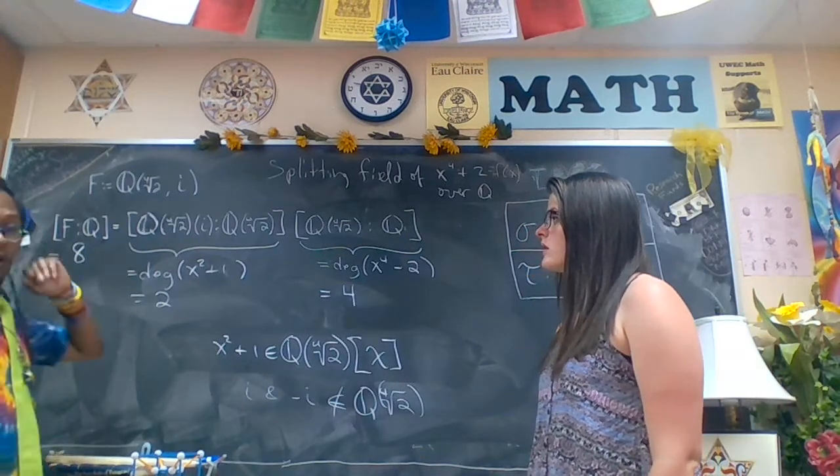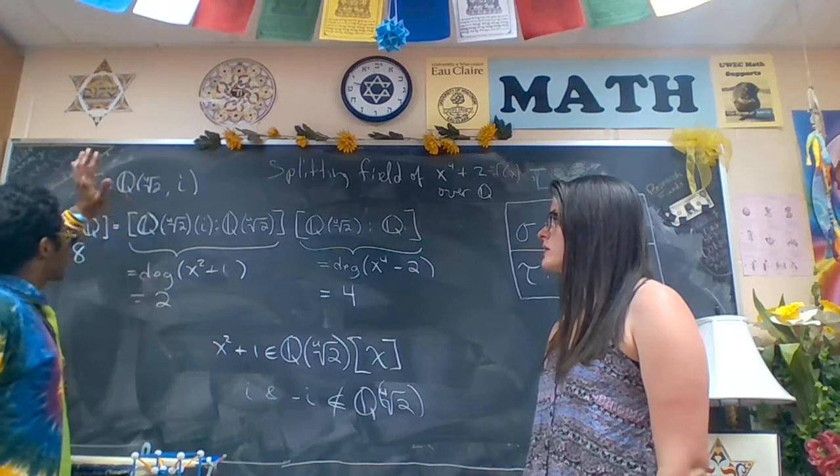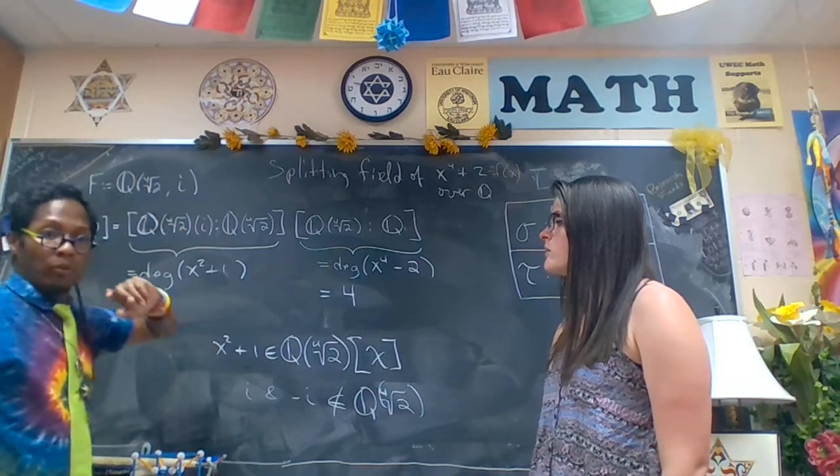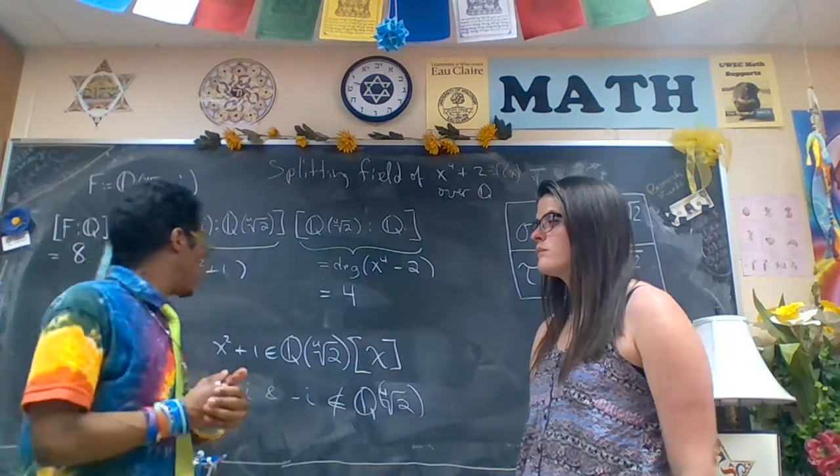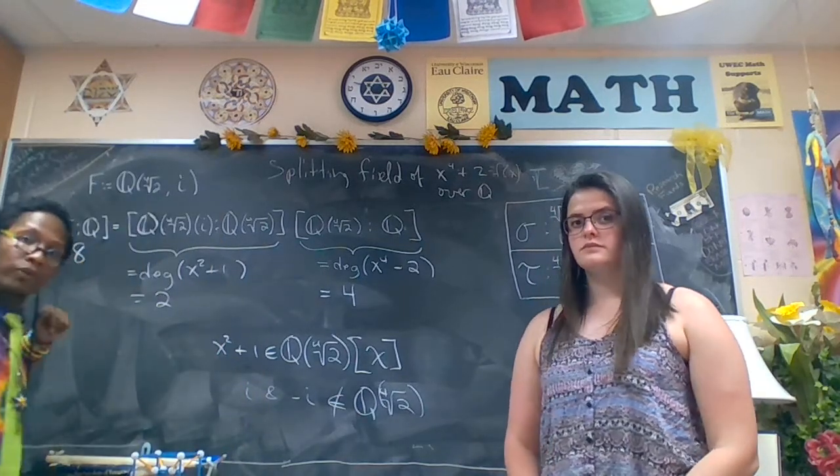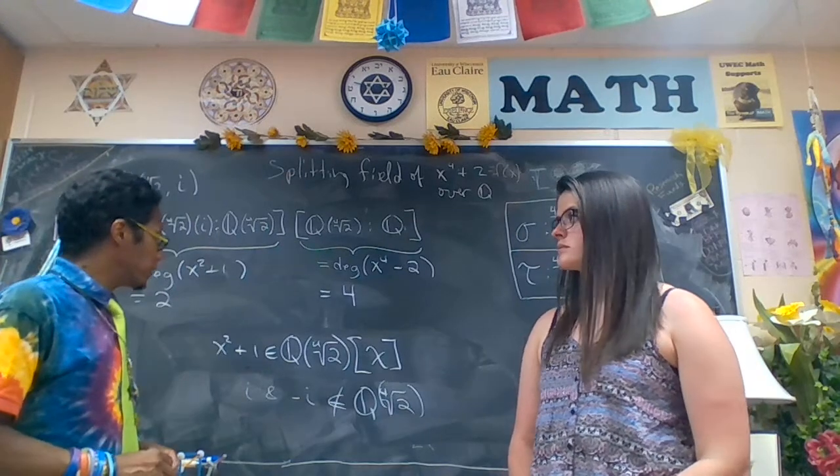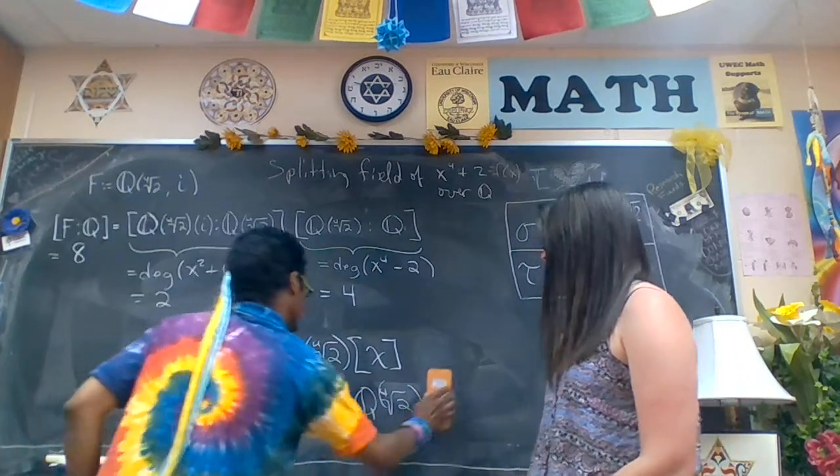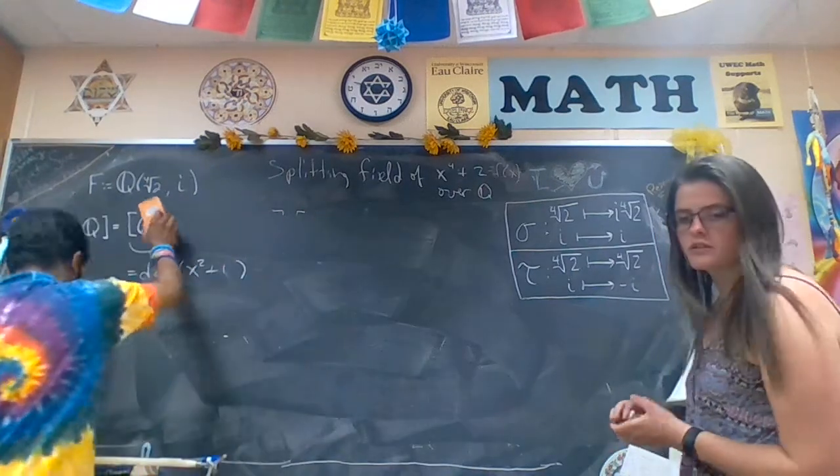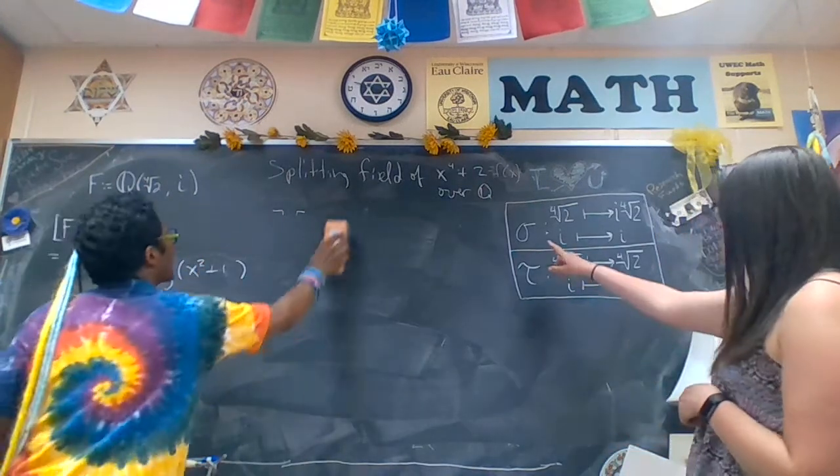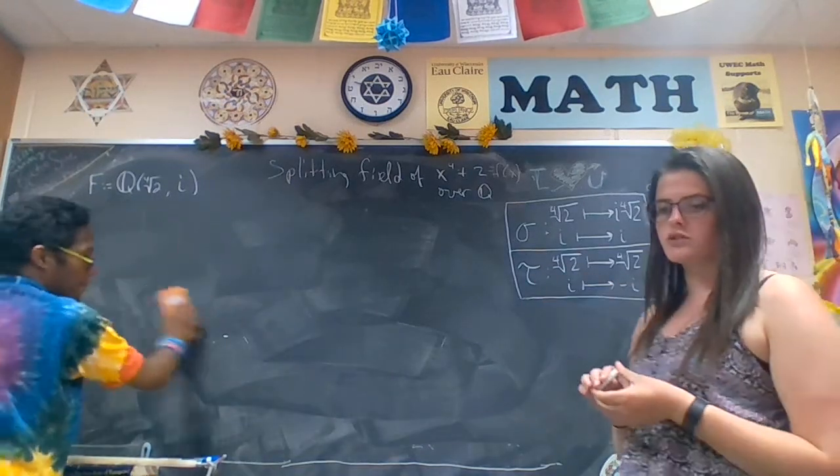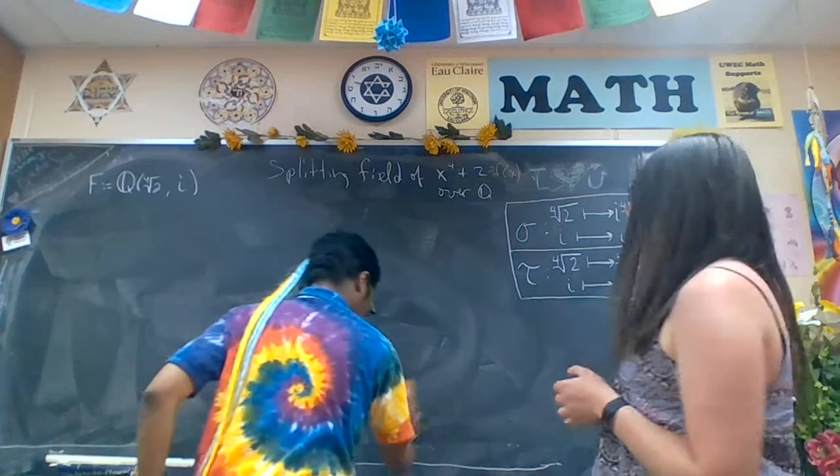So we have a normal and separable extension field. So this is Galois over Q. To find the Galois group, we will know that it has eight elements by the fundamental theorem of Galois theory. So let's begin that now. We're going to consider sigma and tau in the Galois group, Q adjoined fourth root of two and i over Q.